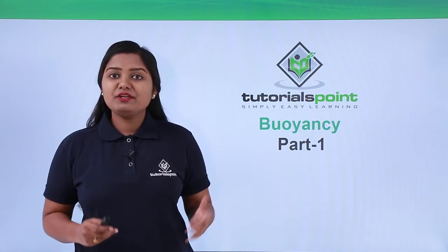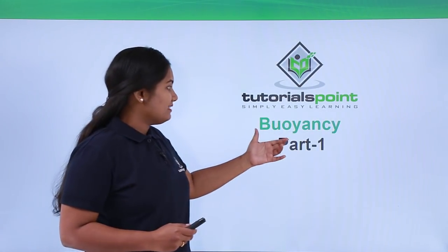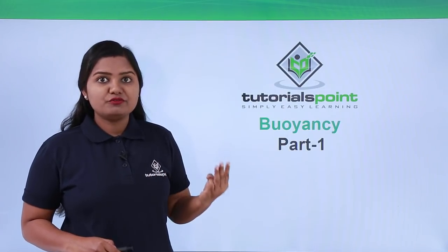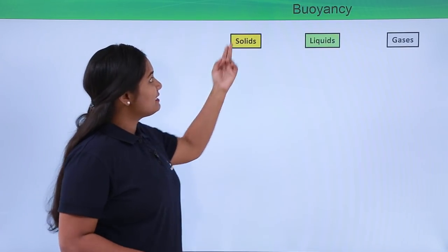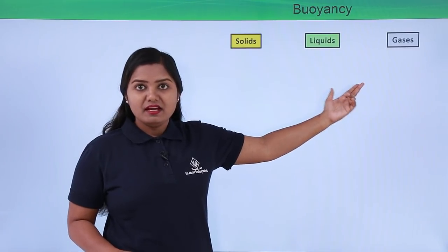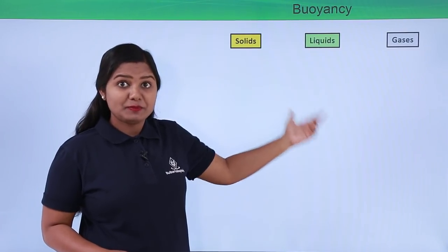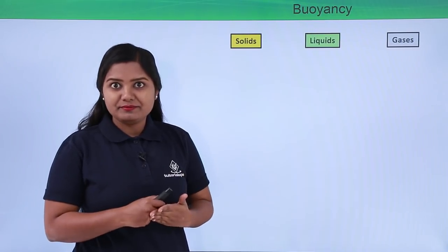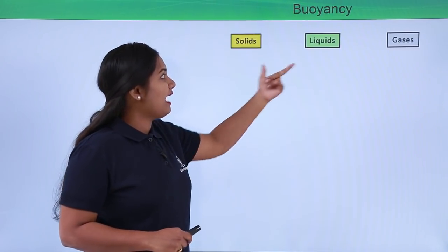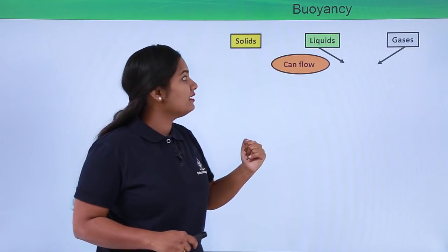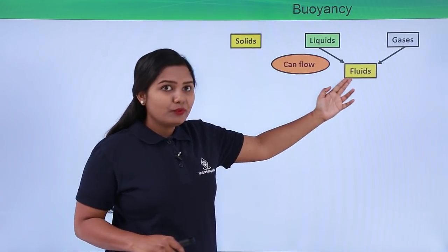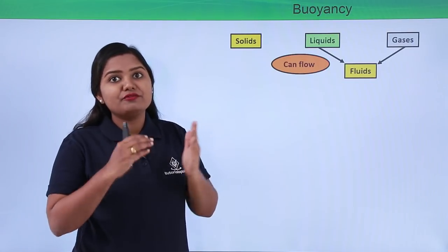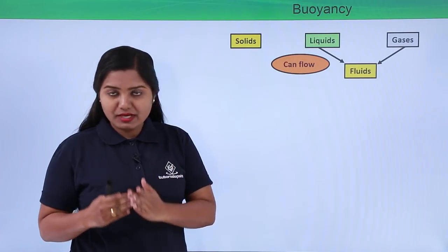Hello everyone. In this video we are going to talk about buoyancy. We know that matter exists in three major forms: solids, liquids, and gases. Liquids and gases have a special property — they can flow from one place to another easily, and that is the reason why we categorize them under a special category which we call fluids. So liquids and gases are considered to be fluids since they can flow easily.